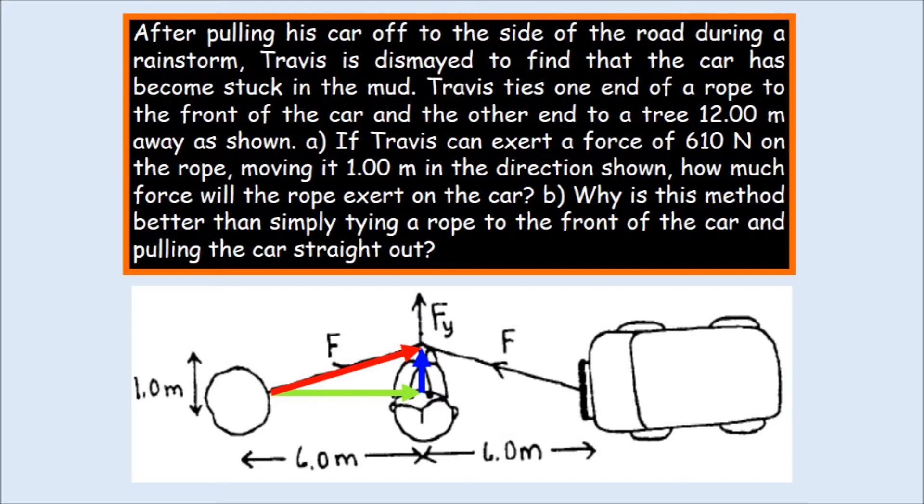Why is this method better than simply tying a rope to the front of the car and pulling the car in a straight line? Well, that will become very obvious when we do the problem. But you can see that the green line, the chartreuse line, is 6 meters. The red line is going to be the tension in the rope. That's really what we're looking for. And then the blue line is going to be his effort, or 610.